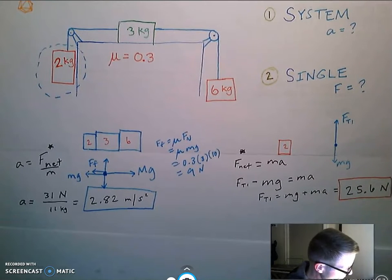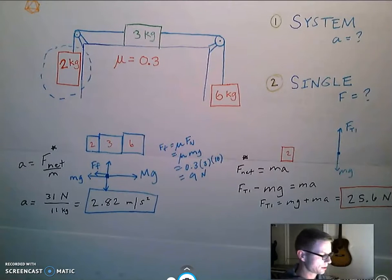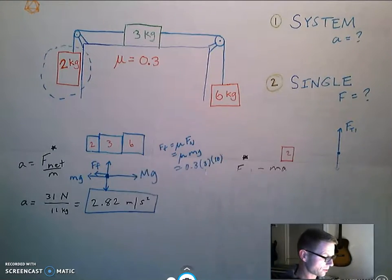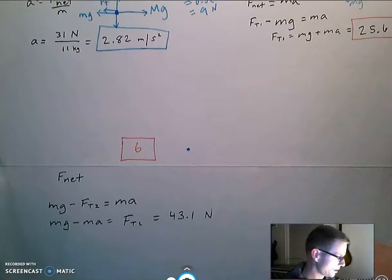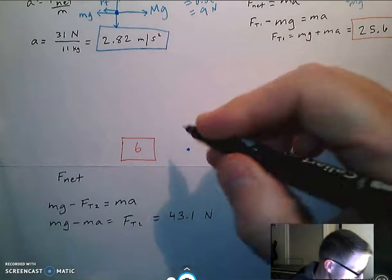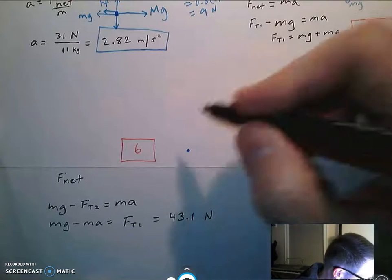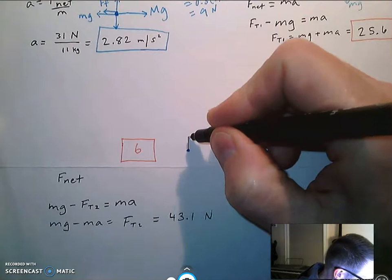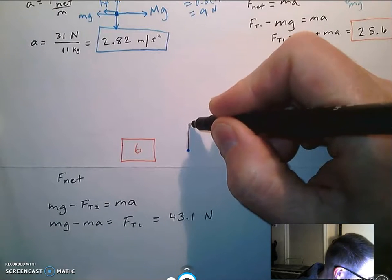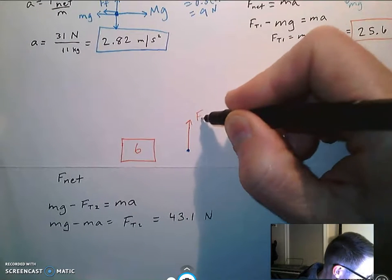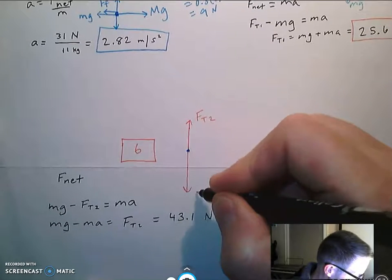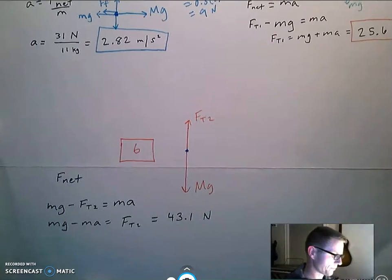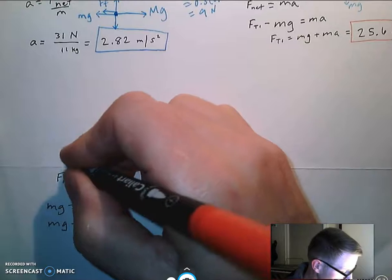And again I focused in on a single object. So now I'm going to focus on a different single object, that being the 6 kilogram mass. If I look at the 6 kilogram mass, I can see that my forces are I have this tension two going up, and I have the very large capital MG going down. So again it's all about the net force.